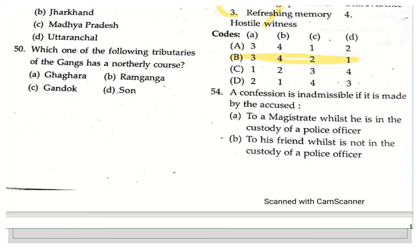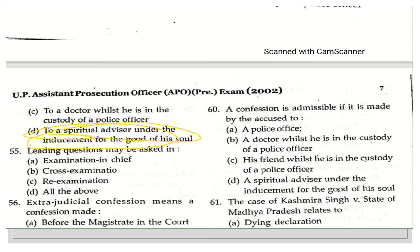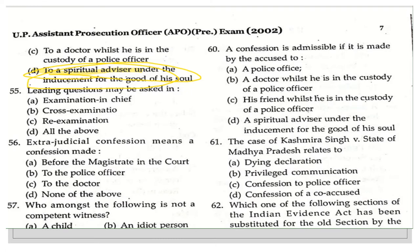The next question asks: when is a confession inadmissible? The options include: to a magistrate while in police custody, to friends while not in police custody, to a doctor while in police custody, or to a spiritual advisor under inducement for the good of his soul. The right answer is the last option — if a confession is made under inducement, it is not a valid confession and is invalid before the magistrate.